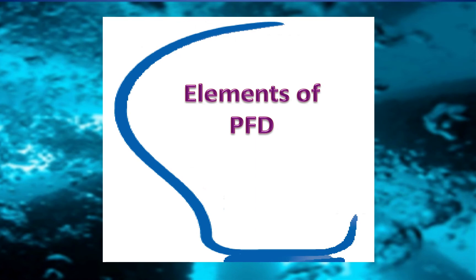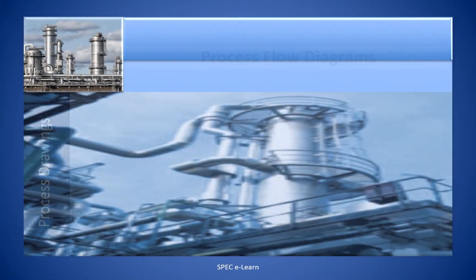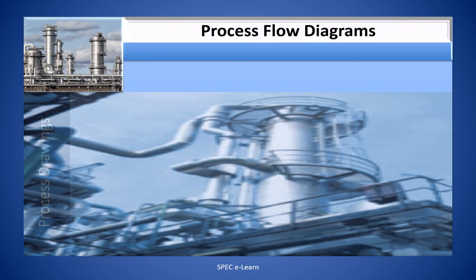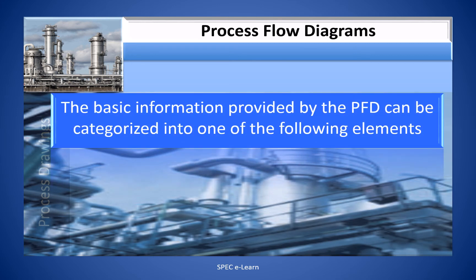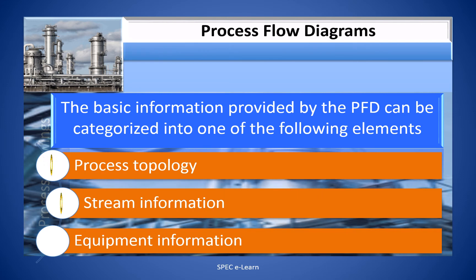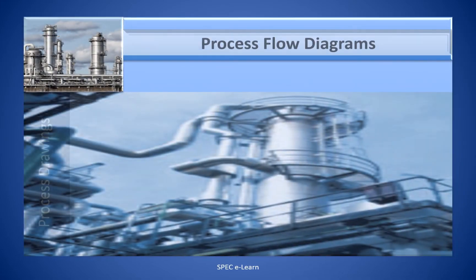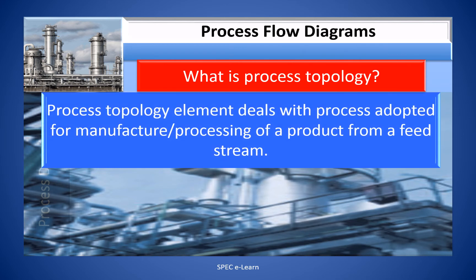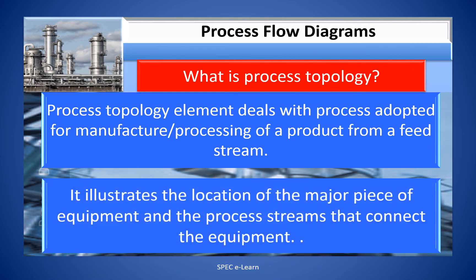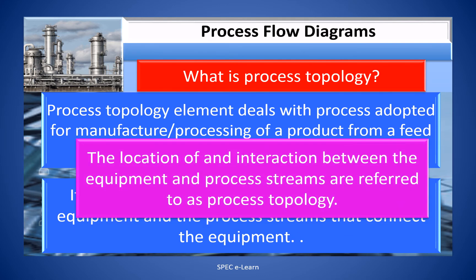Elements of PFD. Having understood how to read a PFD, let us have a look at some of the important elements of PFD. The basic information provided by PFD can be categorized into one of the following elements: process topology, stream information, and equipment information. The process topology element deals with the process adapted for manufacture of a product from a feed stream. It illustrates the location of the major pieces of equipment and the process streams that connect them. The location and interaction between equipment and process streams are referred to as process topology.